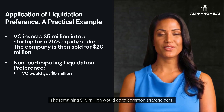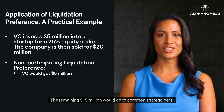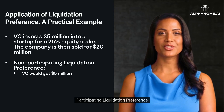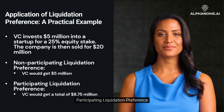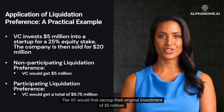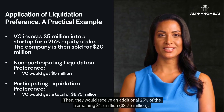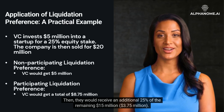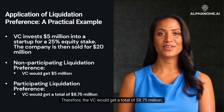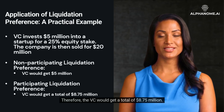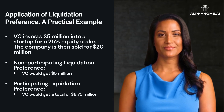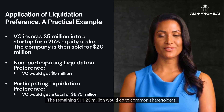The remaining $15 million would go to common shareholders. Under participating liquidation preference, the VC would first recoup their original investment of $5 million. Then, they would receive an additional 25% of the remaining $15 million, which is $3.75 million. Therefore, the VC would get a total of $8.75 million, and the remaining $11.25 million would go to common shareholders.